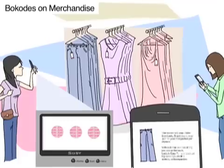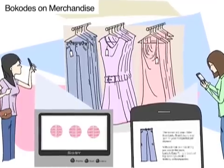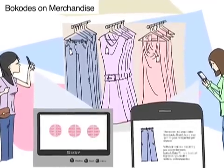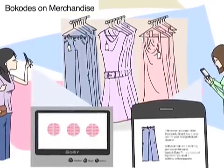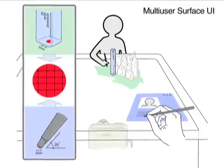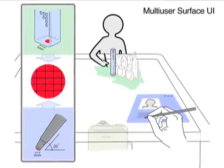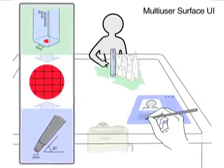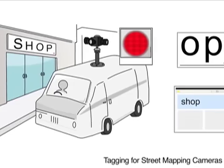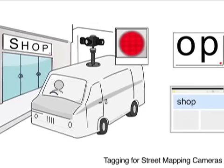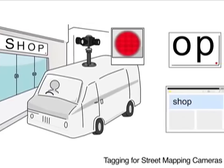We explore the following future scenarios for bokeh codes: passive tagging on clothes and merchandise, machine-human interaction, and tagging on storefronts and facades.